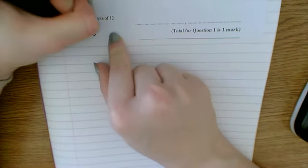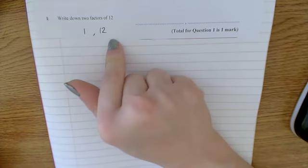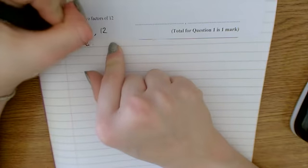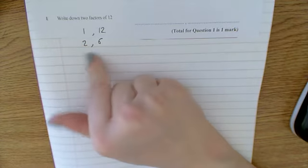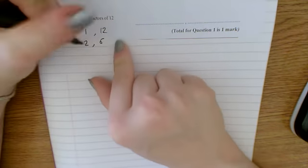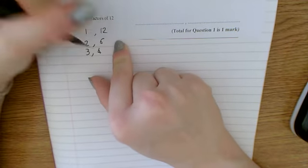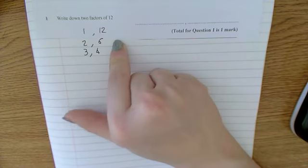So the factors of 12 would be 1 and 12, because 1 times 12 is 12. 2 and 6, because 2 times 6 is 12. 3 and 4, because 3 times 4 is 12. And that's all the factors.